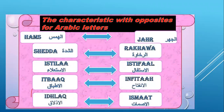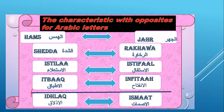In the last videos we started together four characteristics with opposites: hams opposite with jahr, shidda opposite with rakhawa, isti'la opposite with istifal, and itbaq opposite with infitah. Today inshallah we will study together the last characteristic with opposites — it's islaq opposite with ismat. If you want to watch all these videos, you can find the link in the description.